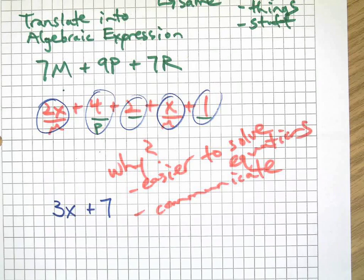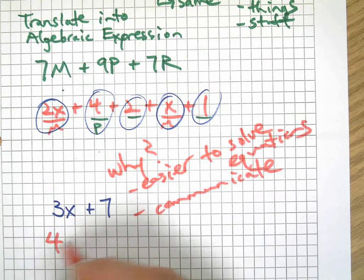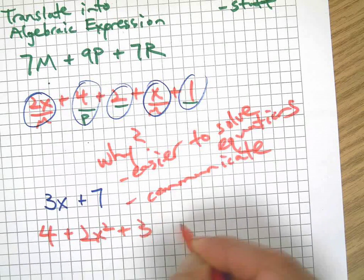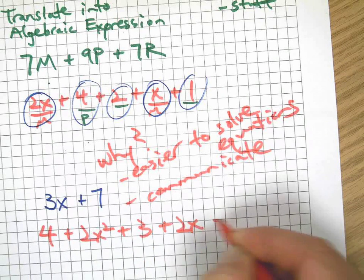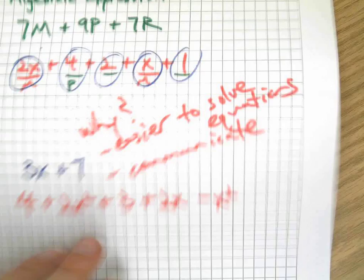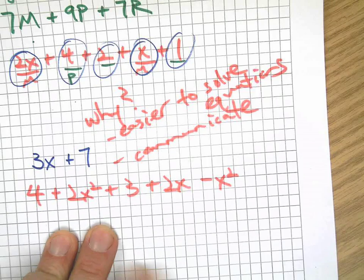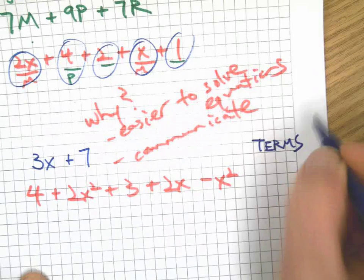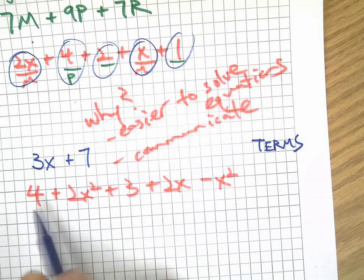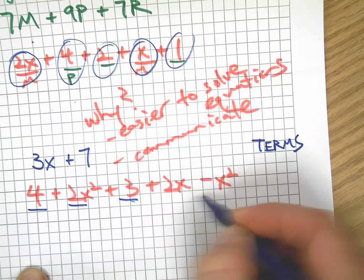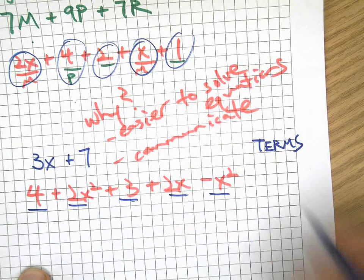Let's do one more practice one here. How about this one? 4 plus 2X squared plus 3 plus 2X minus X squared. Let me give you another little definition for terms. The terms are each individual piece of the expression. So, all of these are terms. There's five terms in this expression.